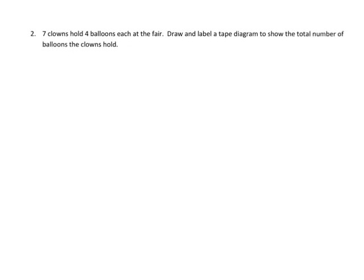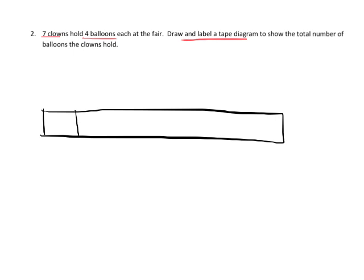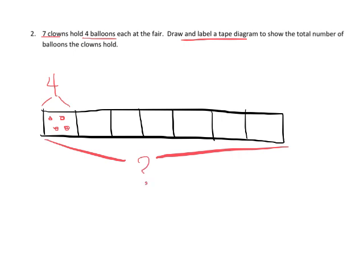In this problem we're asked to draw and label a tape diagram. It says seven clowns hold four balloons each at the fair. I'll draw one through seven boxes — each represents a clown. We put four balloons in each box to show four balloons per clown, giving us seven groups of four.